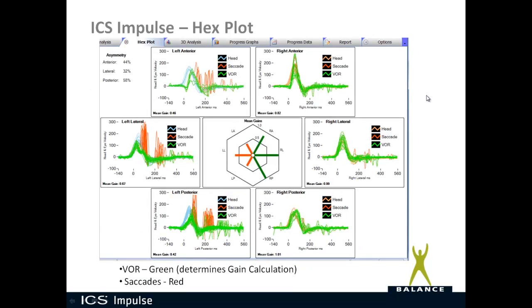The new hex plot, introduced in software version 2.0, provides an easy visual view of all six canals: left anterior, left lateral, left posterior, right anterior, right lateral, right posterior. Green bars are within normal limits, orange bars are abnormal (low gain), and yellow bars indicate gain above 1.2. Bar color is based on mean gain — for example, left lateral mean gain 0.67 falls in the gray region so the bar is orange, while right lateral mean gain 0.99 falls in the white region so the bar is green.